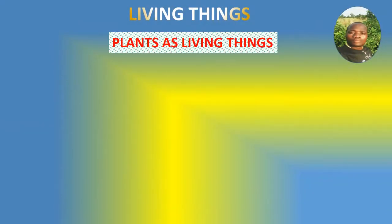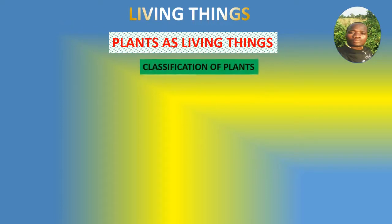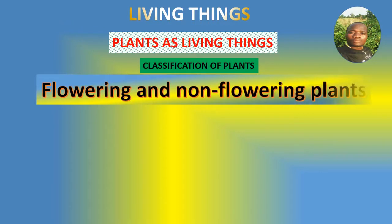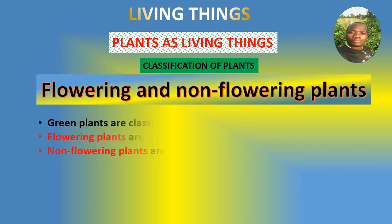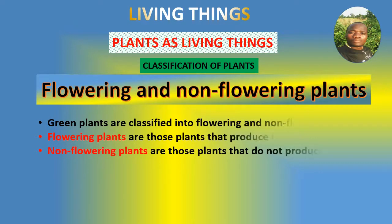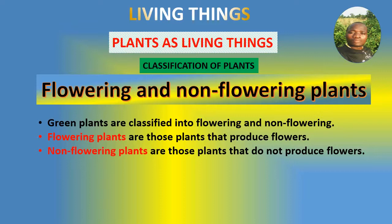Plants as living things. Classification of plants. Green plants are classified into flowering and non-flowering. Flowering plants are those plants that produce flowers. Non-flowering plants are those plants that do not produce flowers.